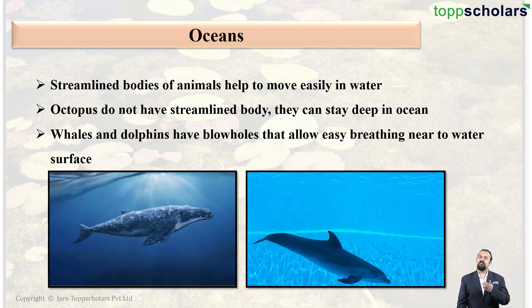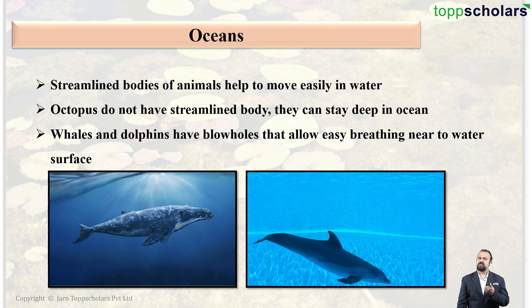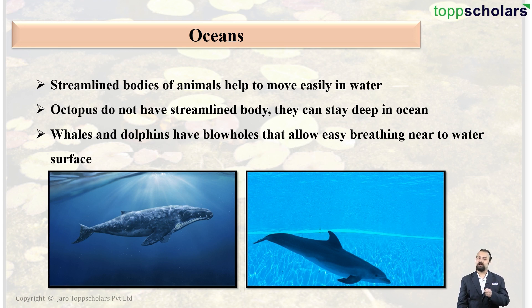Moving on — whales and dolphins, even though they look like fish, are actually mammals. As they are mammals, they do not have gills. Instead, they have lungs and blowholes, which allow them to breathe easily at the surface of the water.